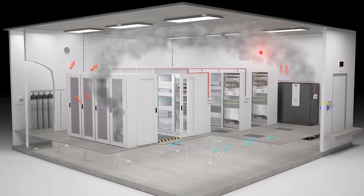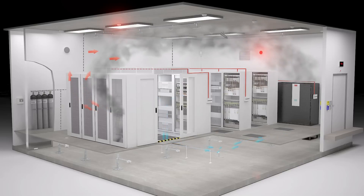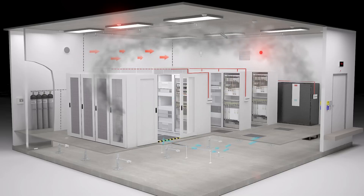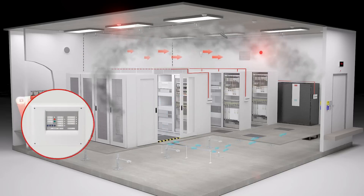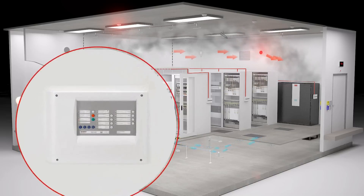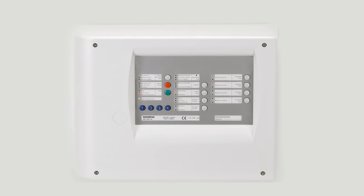As additional smoke develops, the point type smoke detector triggers a fire alarm and signals to the extinguishing control panel. The extinguishing control panel shows that two zones are in alarm state.